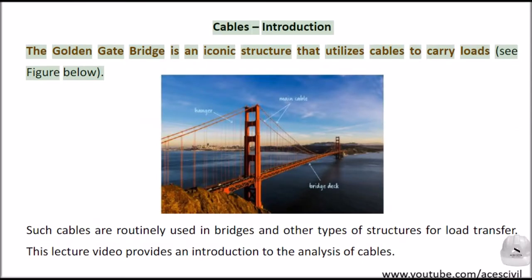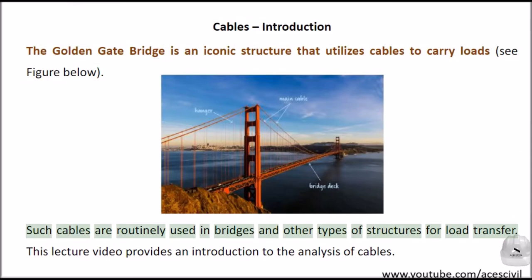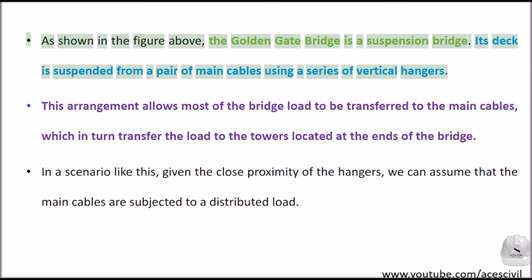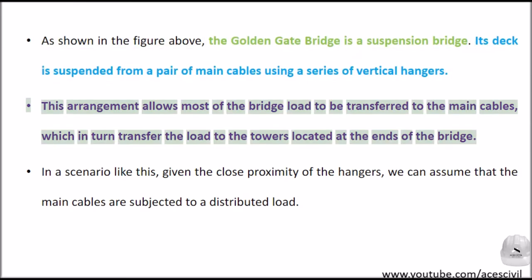The Golden Gate Bridge is an iconic structure that utilizes cables to carry loads. Such cables are routinely used in bridges and other types of structures for load transfer. This lecture video provides an introduction to the analysis of cables. The Golden Gate Bridge is a suspension bridge. Its deck is suspended from a pair of main cables using a series of vertical hangers, and this arrangement allows most of the bridge load to be transferred to the main cables, which in turn transfer the load to the towers located at the ends of the bridge.